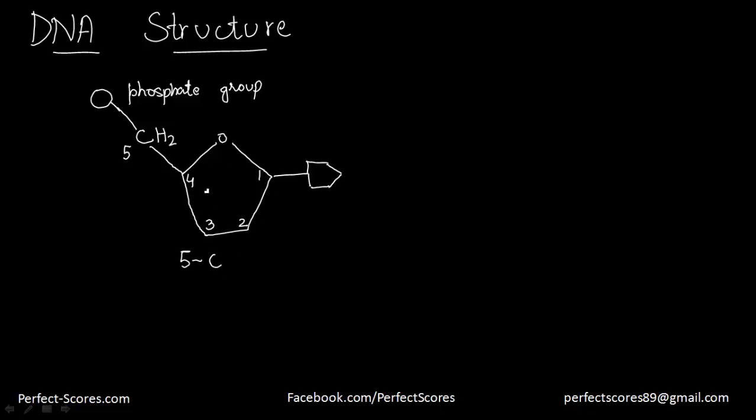We call it a 5C sugar because it has 5 carbon atoms. First, second, third, fourth and fifth one is here outside the ring. So this is a 5C sugar. And in case of DNA, it is deoxyribose.